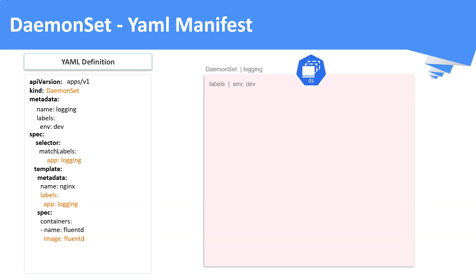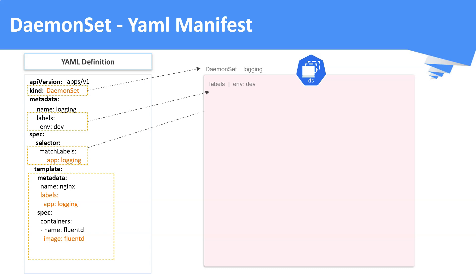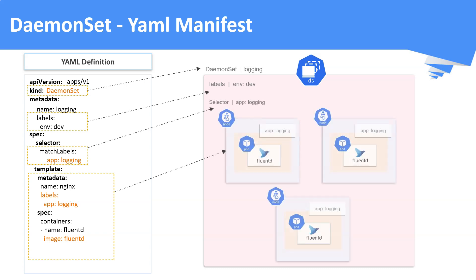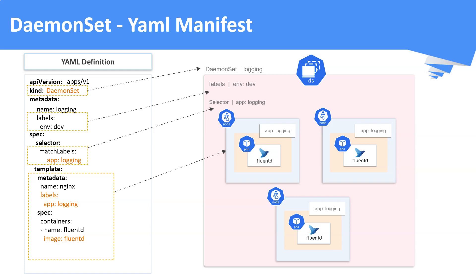On the right you can see a DaemonSet named 'logging' with the label environment: development. You can see the connections between the selector labels and the pod template definitions. The selector label and the pod template label must match each other. Since this is a DaemonSet, its pods will be running in all the available worker nodes.